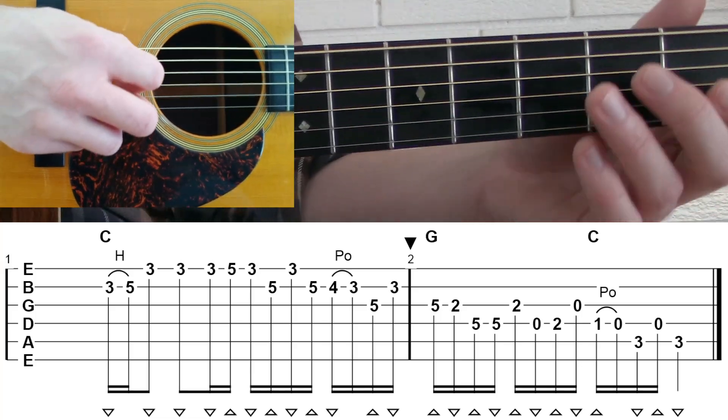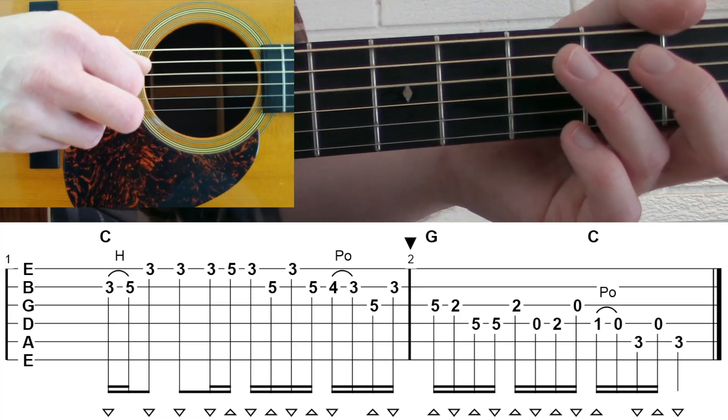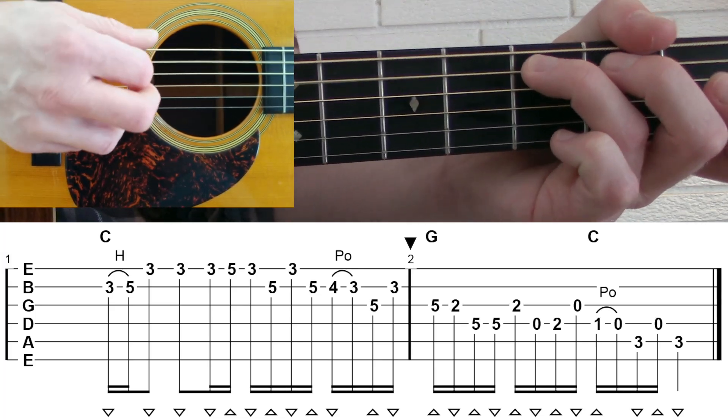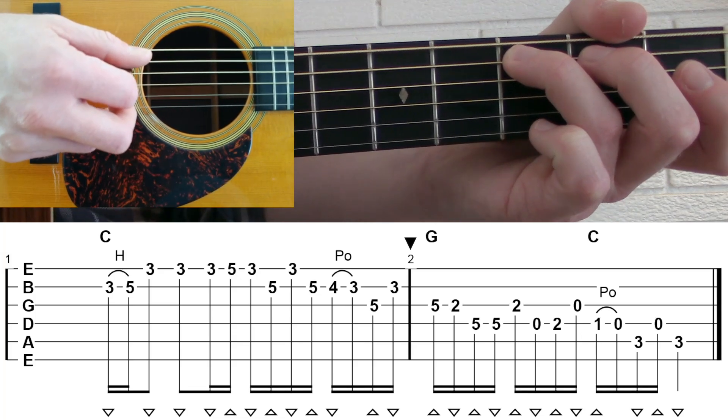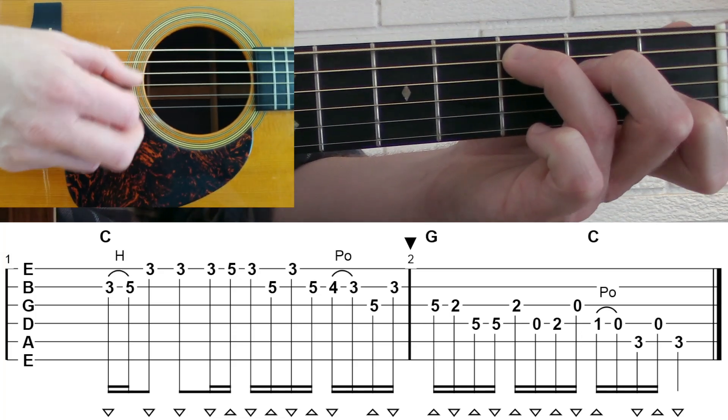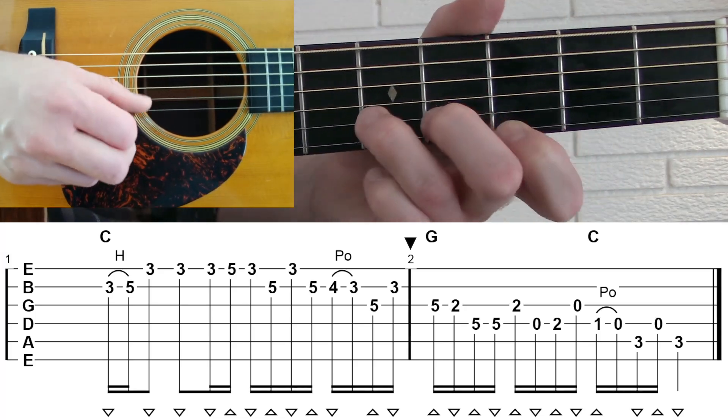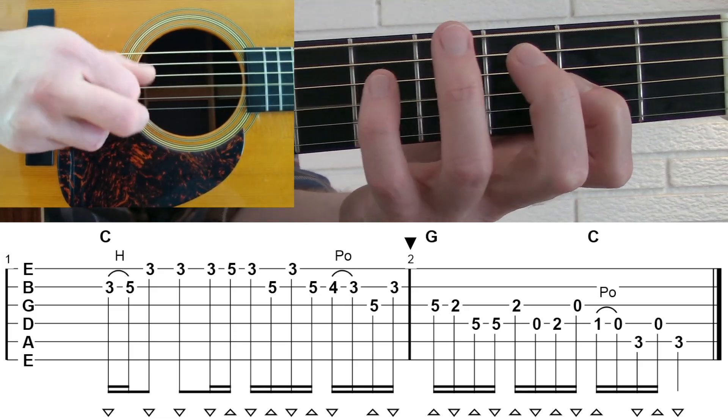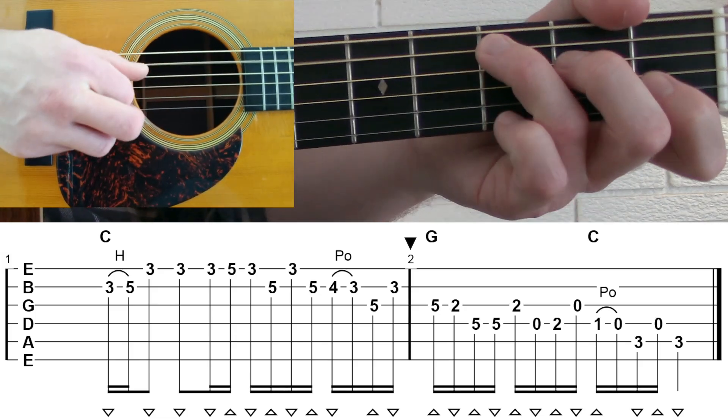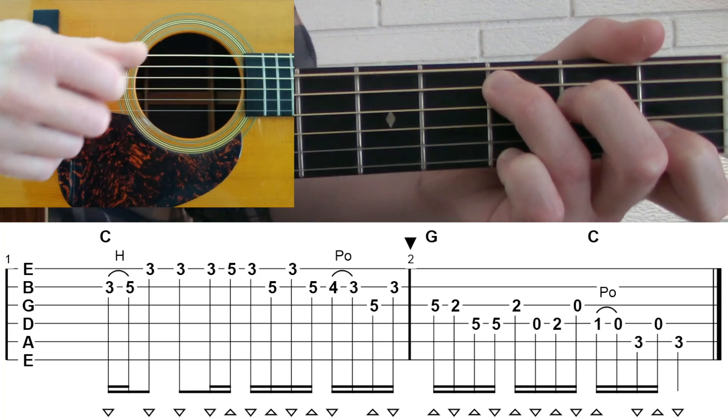And then we have open D to second fret D to open G. And then you see first fret D to open on a pull off. And then third fret A to open D to third fret A. That's kind of, you're back in your kind of root position there in the key of C.